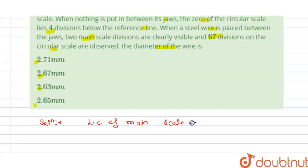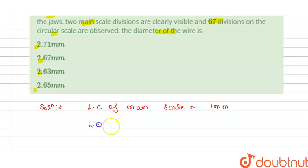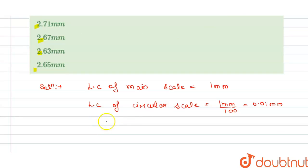And we have the least count of circular scale, so this is given to us: 1mm divided by 100, so this will become 0.01mm. And zero is below the reference line.